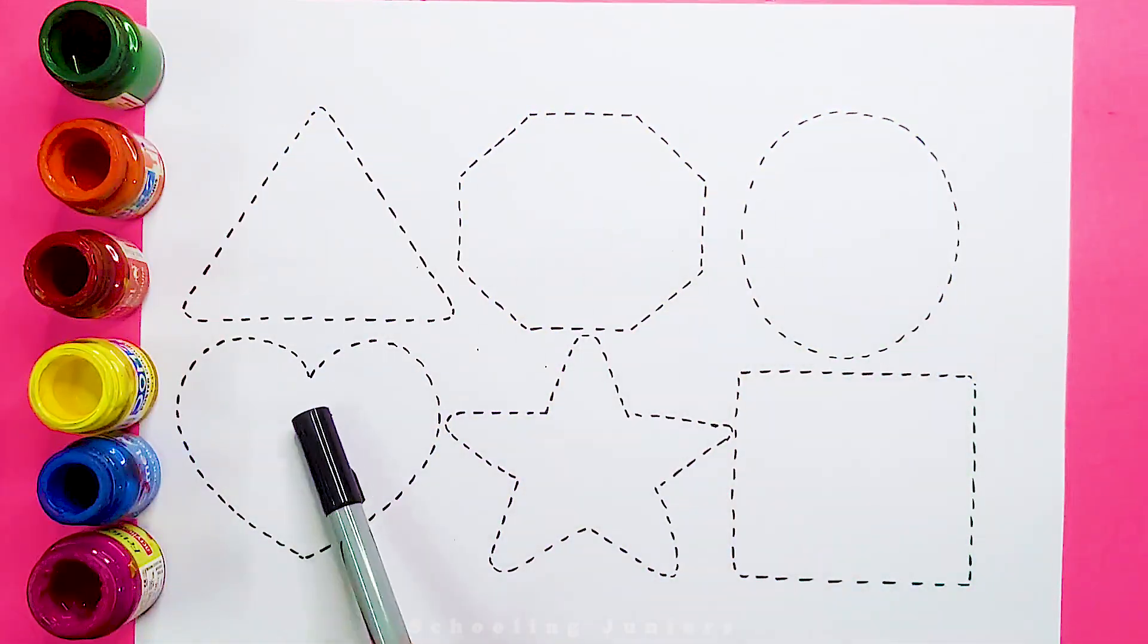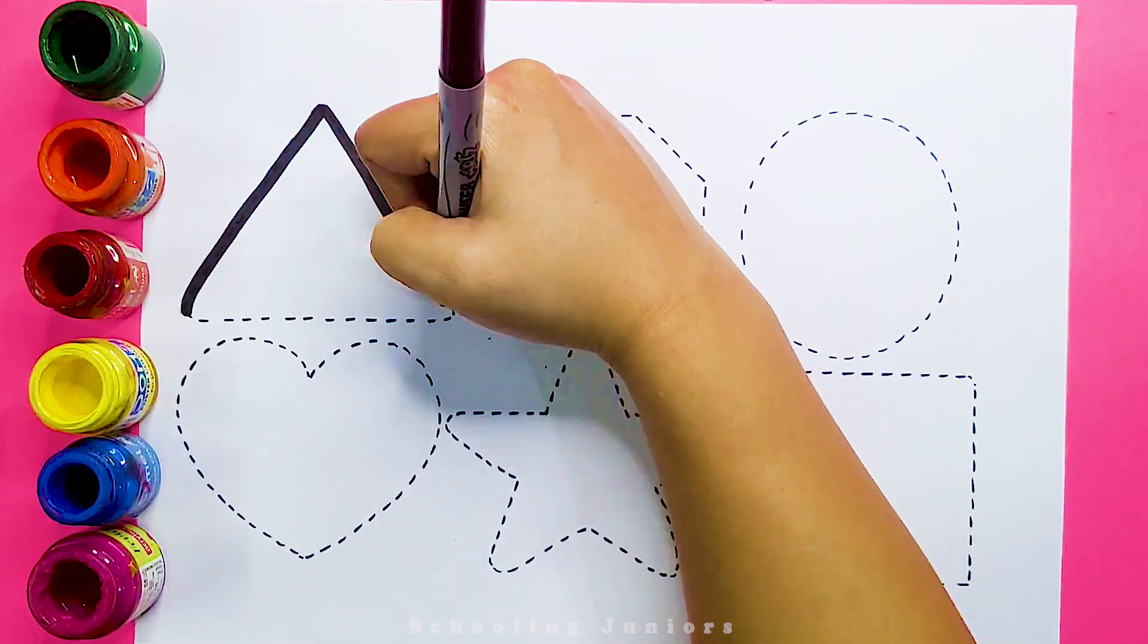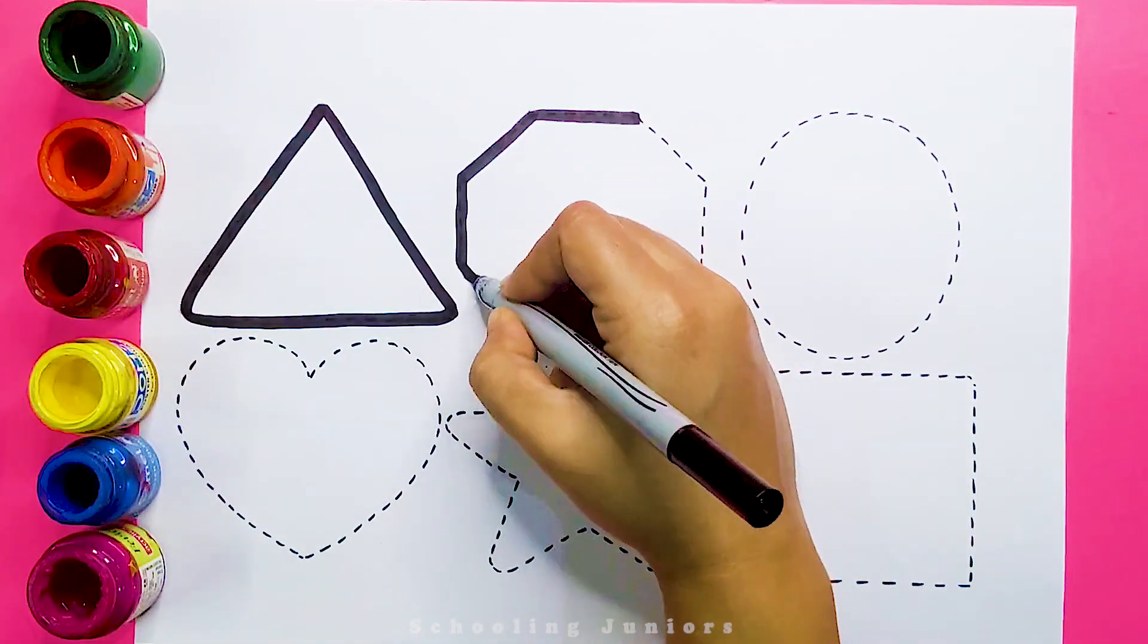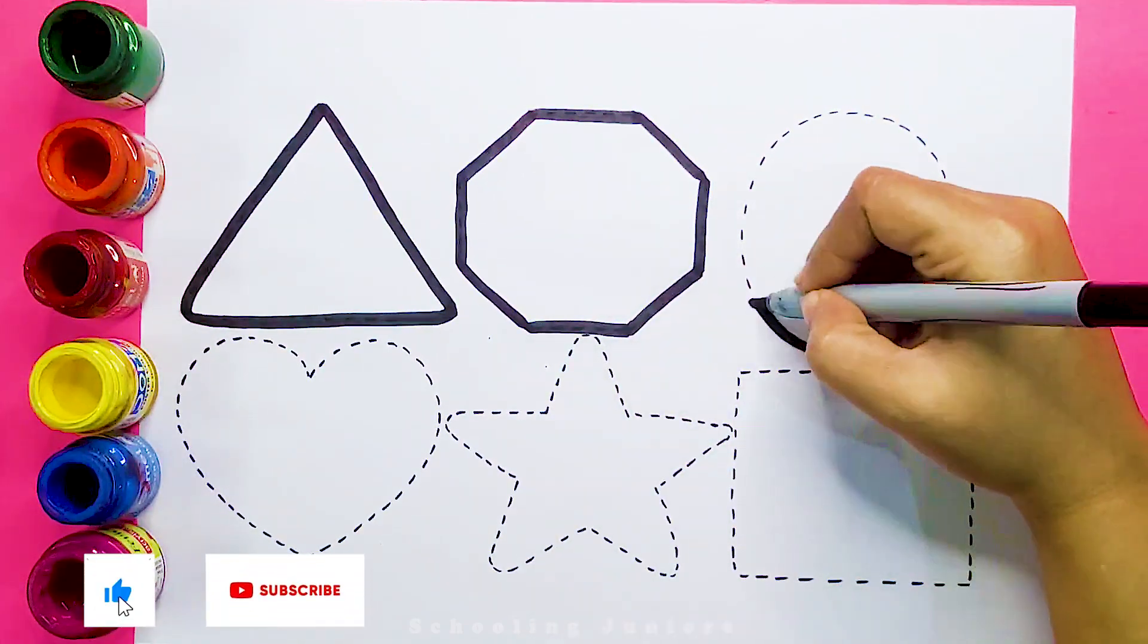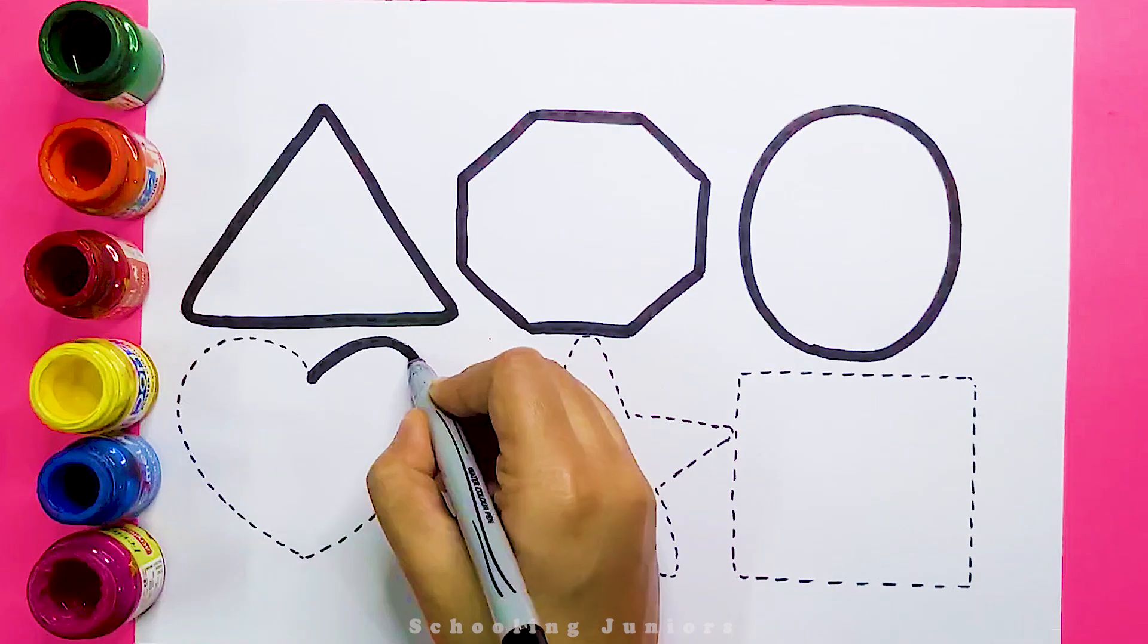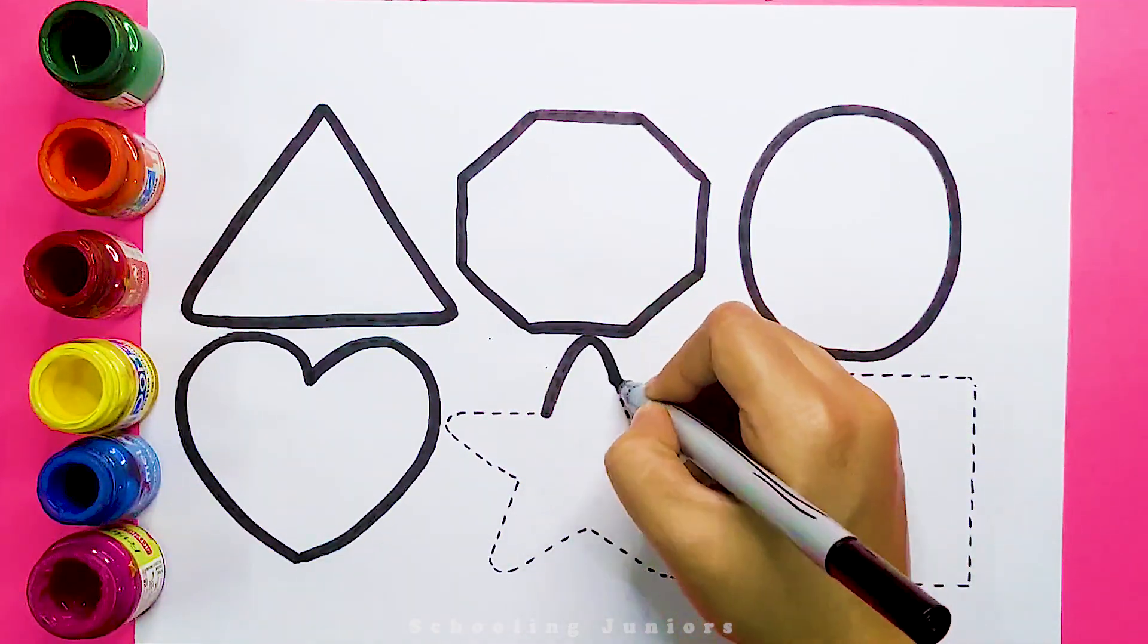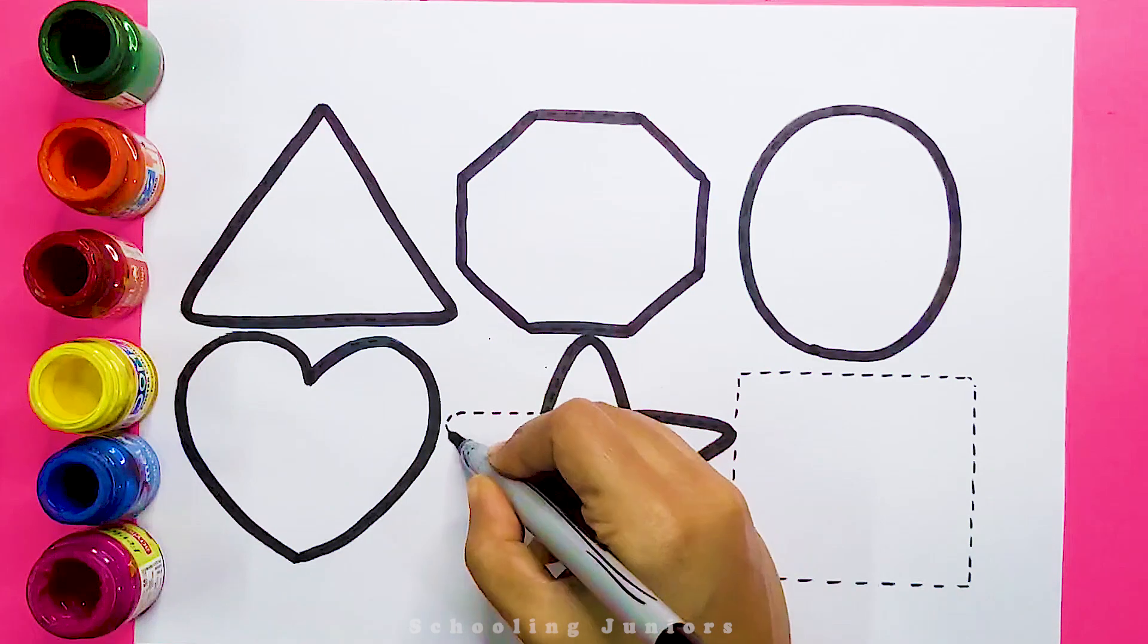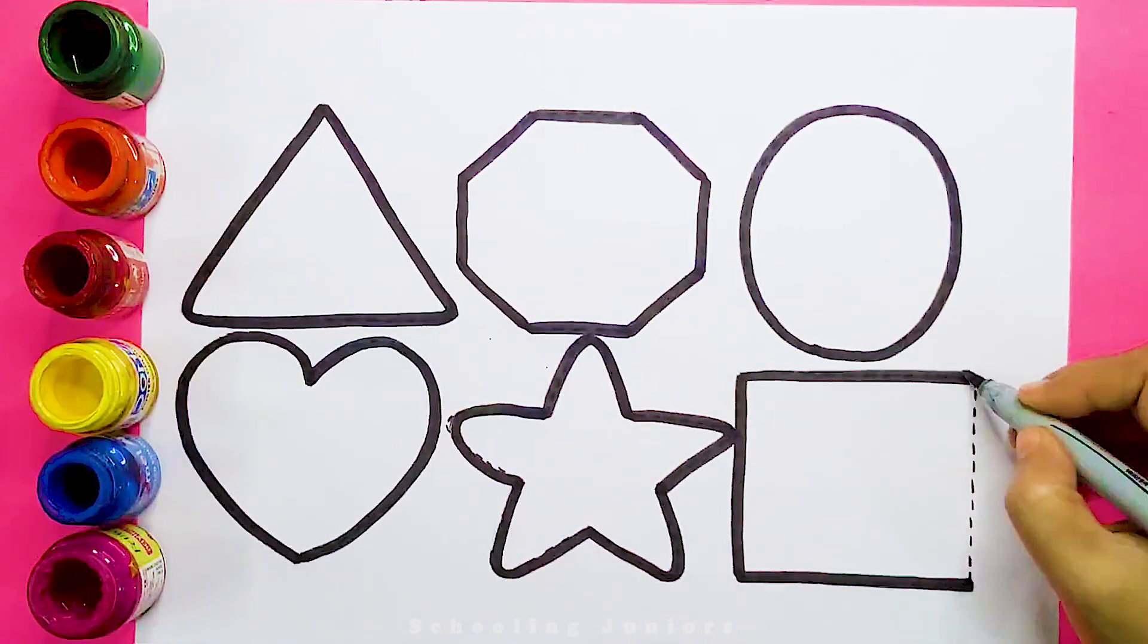Now, let's learn to draw some 2D shapes. Triangle. Octagon. Circle. Heart. Star. Square.